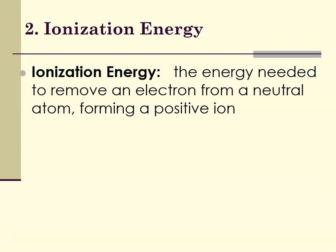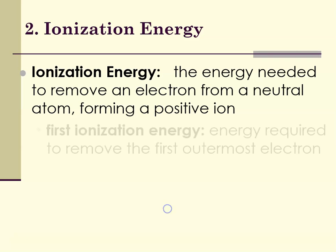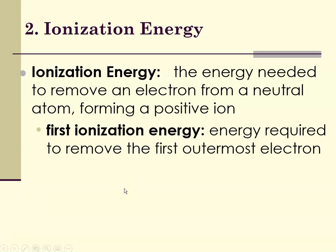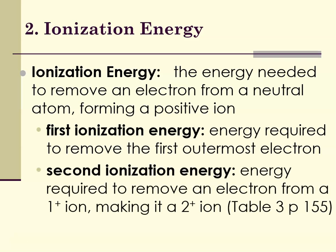Ionization energy is defined as the energy needed to remove an electron from a neutral atom, thereby forming a positive ion. The first ionization energy refers to the energy it takes to remove the first electron. The second ionization energy is the energy required to remove a second electron. If losing one electron is beneficial, it would have a low first ionization energy, but to lose the second electron, since it's now stable, it would require a higher ionization energy. There is a table in your book on page 155 that I encourage you to look at.